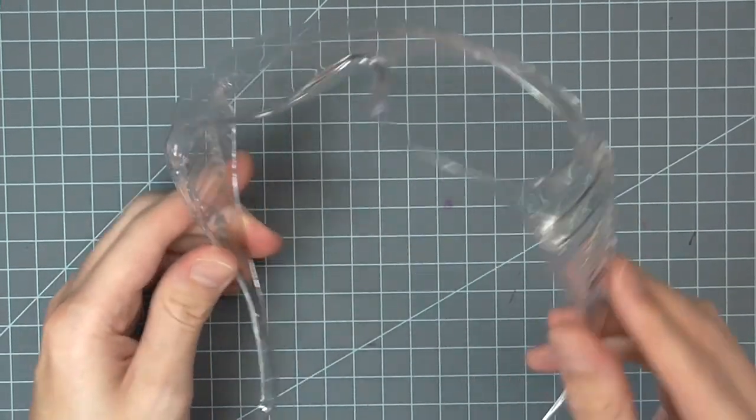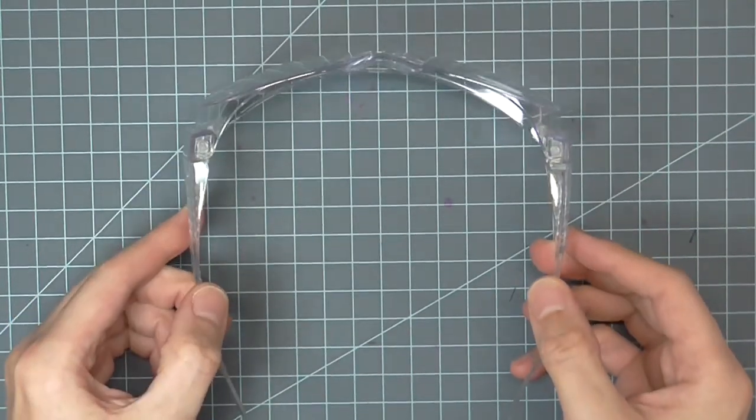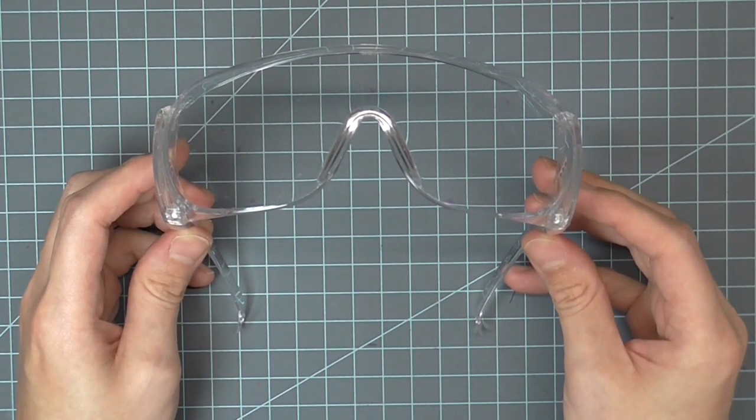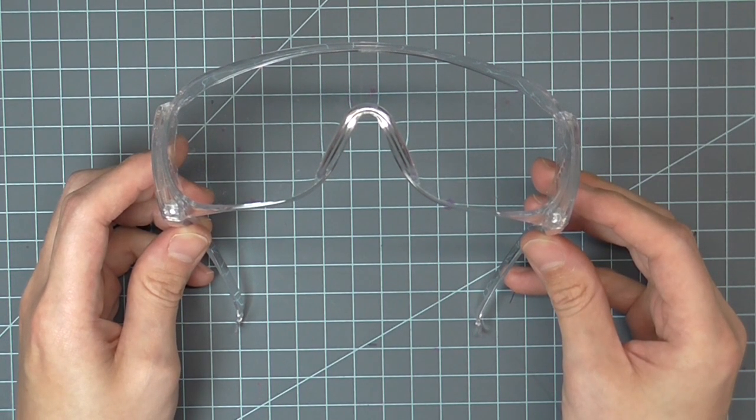Whenever sewing wire with a sewing machine, you must wear eye protection. If the needle hits the wire by accident, it will not break. It will shatter. Remember, safety first.